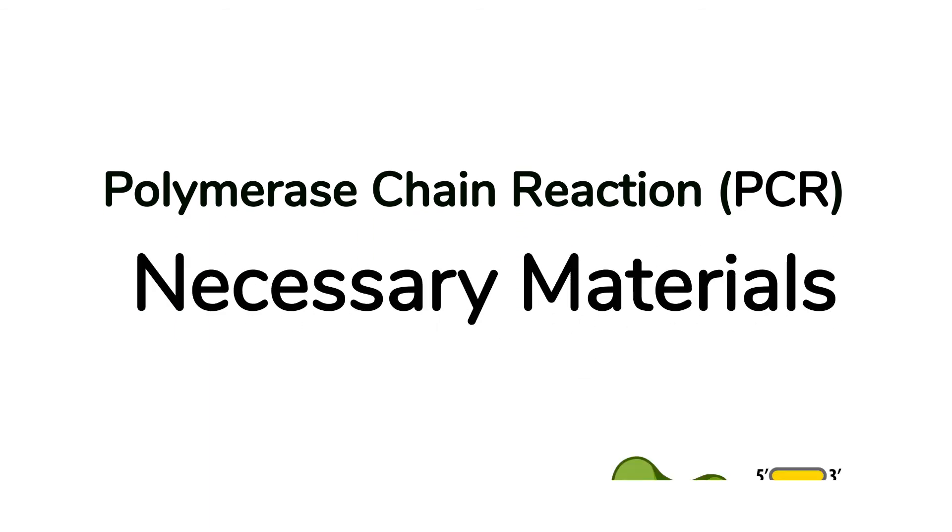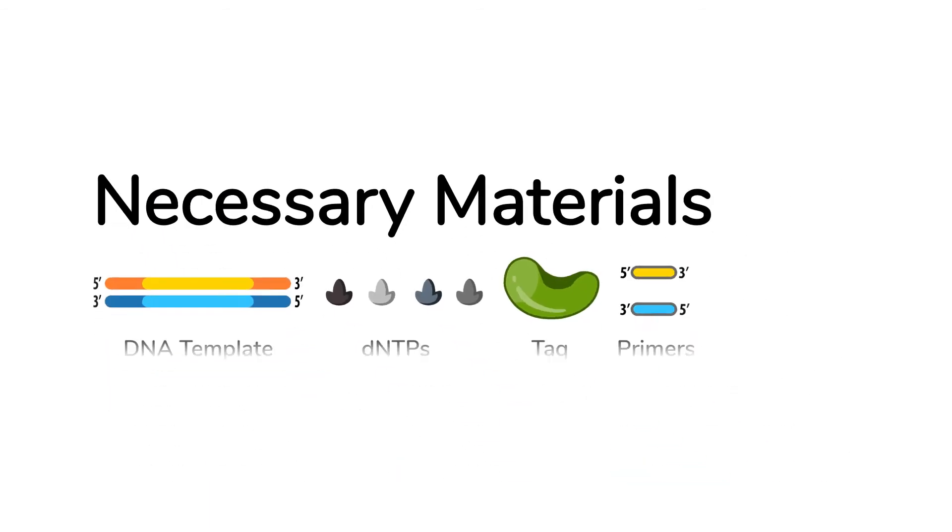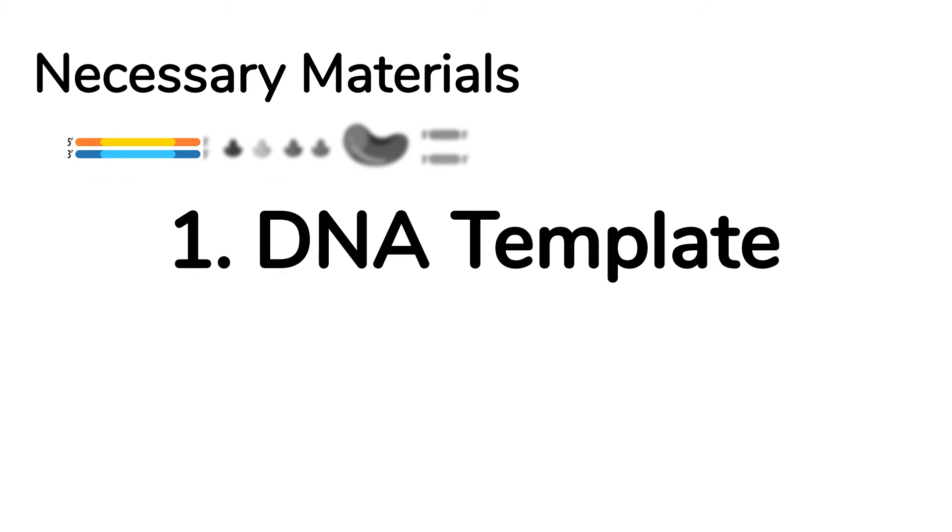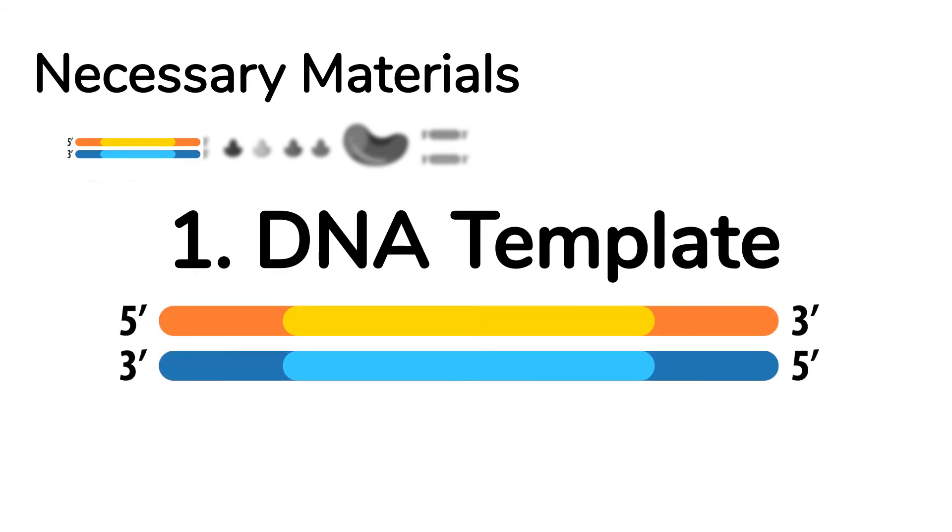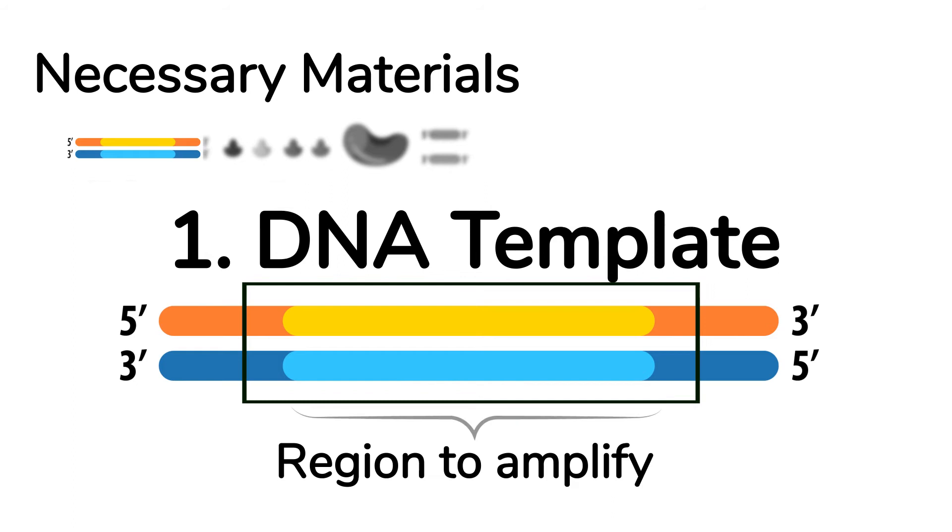To understand the mechanism of PCR, let's begin by listing the necessary materials. First, we need a DNA template, which is a stretch of double-stranded DNA containing the region we want to amplify.